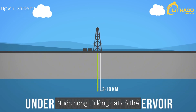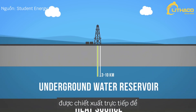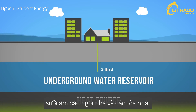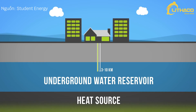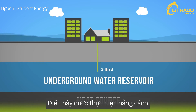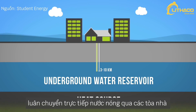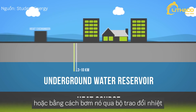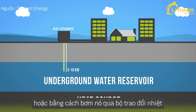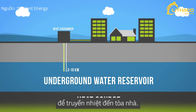Hot water from the Earth may be directly extracted to heat homes and buildings. This is done either by directly circulating the hot water through buildings, or by pumping it through a heat exchanger that transfers the heat to the building.